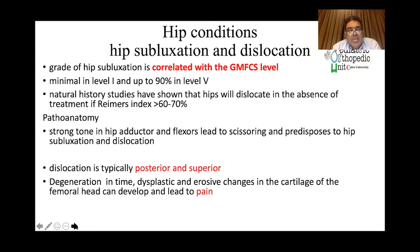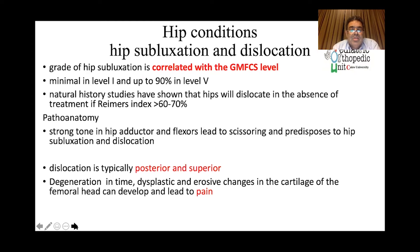Why does the hip subluxate or dislocate in CP? It is not like developmental dysplasia of the hip. It is due to both soft tissue and bony problems. The soft tissue problem is mainly hip adductor contracture causing limited hip abduction, combined with iliopsoas and flexor tightness, which together drive the hip into subluxation and dislocation. The bony problem is due to persistence of excessive femoral anteversion, coxa valga, and acetabular dysplasia. All of this leads to progressive migration of the femoral head outward, superiorly and posteriorly, eventually causing degenerative changes and pain.